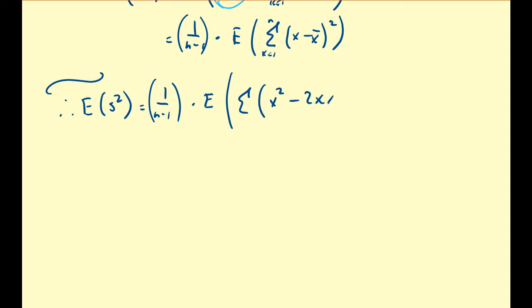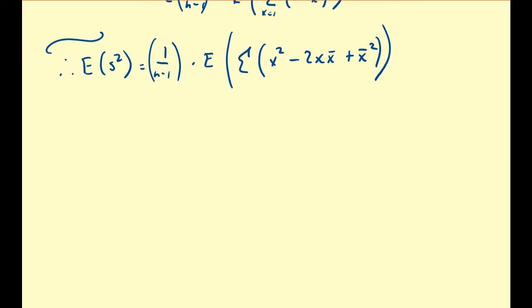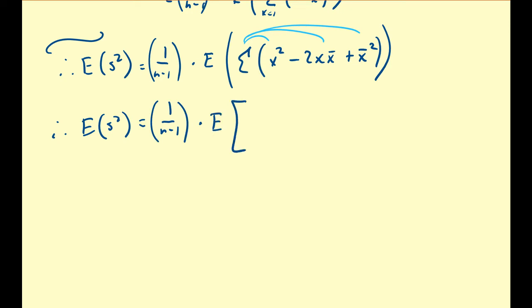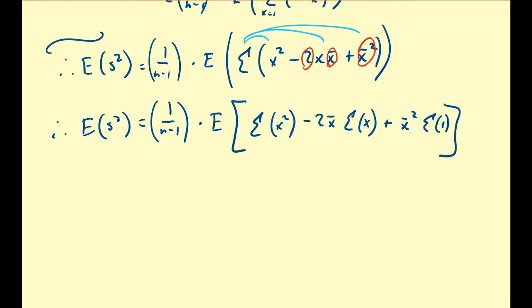After distributing everything, we get the expected value of S-squared equal to one over n minus one times the expected value of: the sum of X-squareds, minus two times X-bar times the sum of X, plus X-bar-squared times the summation of one — since 2 and X-bar are constants with respect to the summation. That last summation of one, taken n times, is just n, giving us plus X-bar-squared times n.